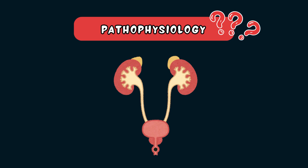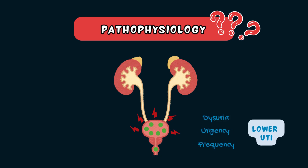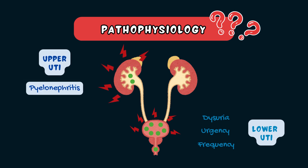Once in the bladder, these bacteria stick to the bladder lining and multiply, triggering the body's immune response. This causes inflammation, which is cystitis, leading to those classic UTI symptoms of burning with urination, urinary urgency, and urinary frequency — known as a lower urinary tract infection. If left untreated, the infection can travel up the ureters and to the kidneys, causing a more serious infection called pyelonephritis, or an upper urinary tract infection.